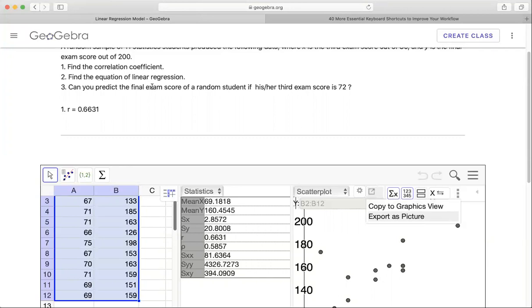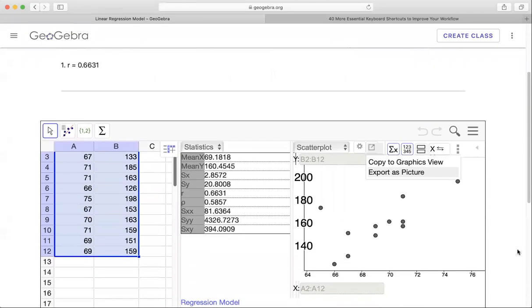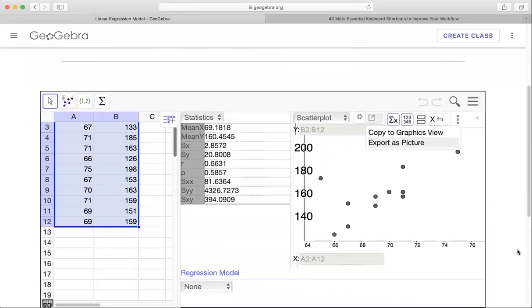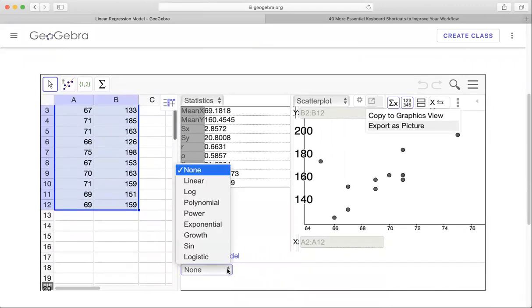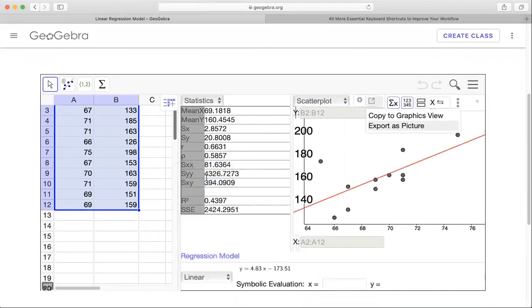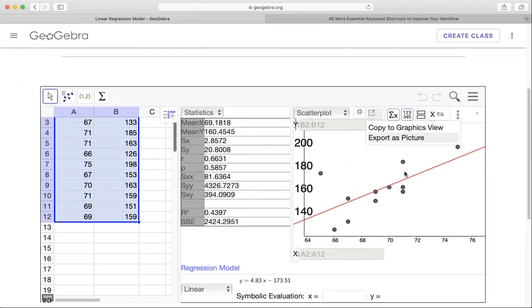And then number two, they ask you find the equation of linear regression. So again, if you compute it by hand, it takes a long time and it's kind of tedious to do. So we're going to have the machine do it for us. Down here, you're going to click on linear right here. And then you see the line right here. So this is the approximation of the equation line for the linear line for this model.